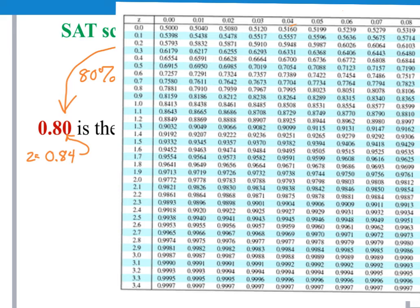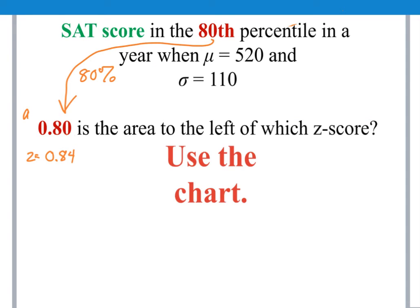Let's remove the chart. So once again, we started with the percentile, which is an area, and we moved to the z-score. We still do not know the SAT score that we're looking for. We'll use the z-score formula to find it. When we calculate a z-score, we're looking at the value minus the mean divided by the standard deviation. So in this case, we have the z-score, it's 0.84.